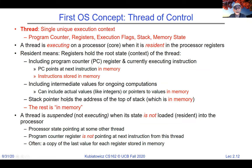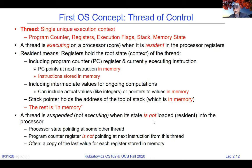A thread is suspended — no longer executing — when its state is not loaded in registers. At that point the processor state is pointed at some other thread. The suspended thread sits in memory, not executing, while something else runs on the processor.